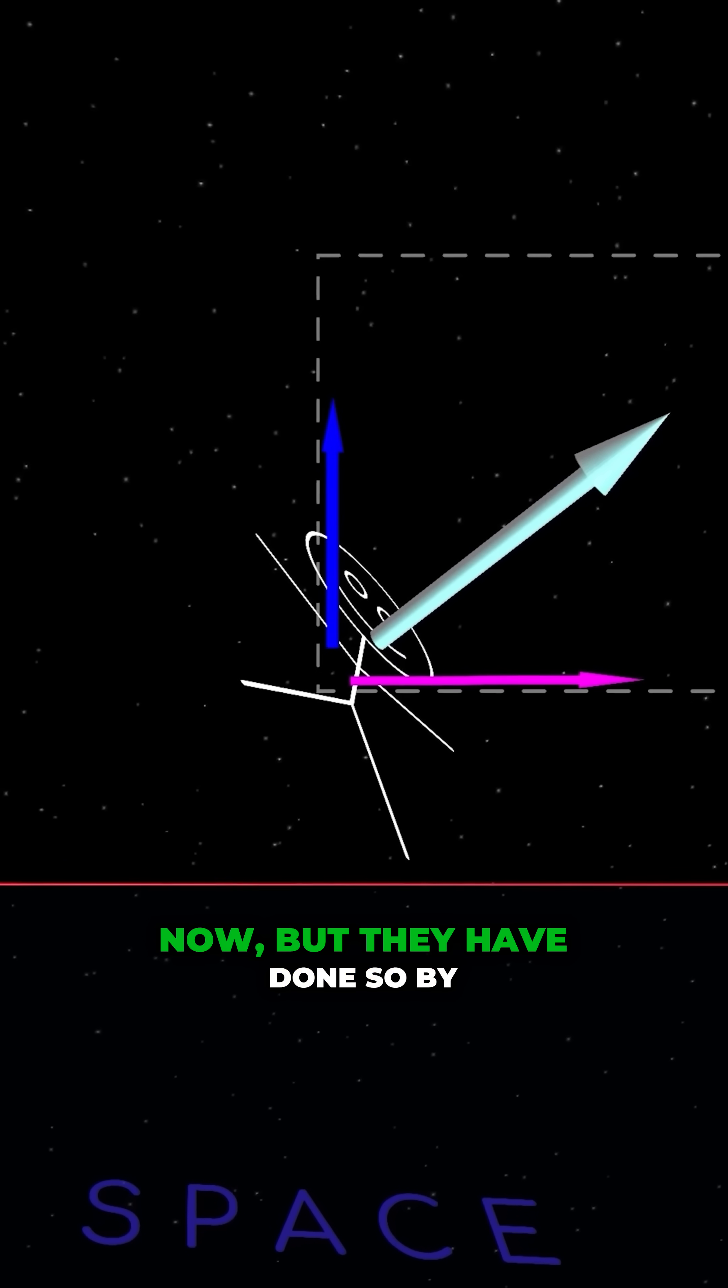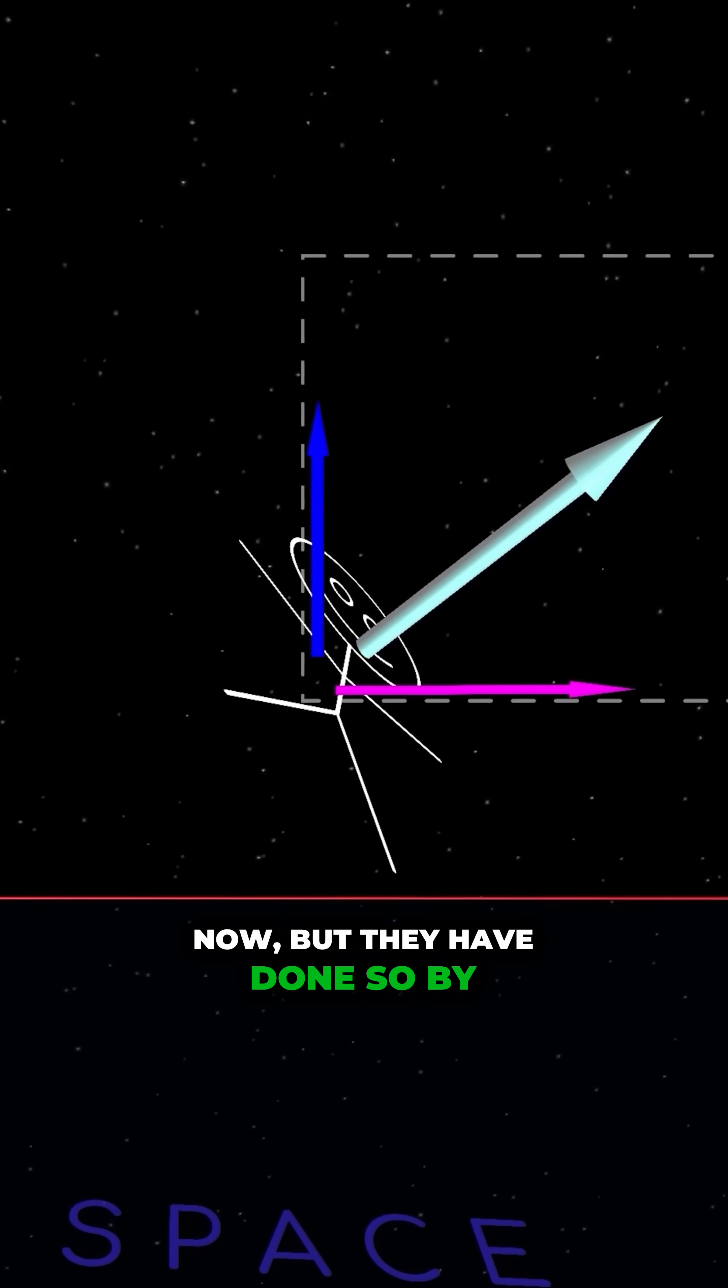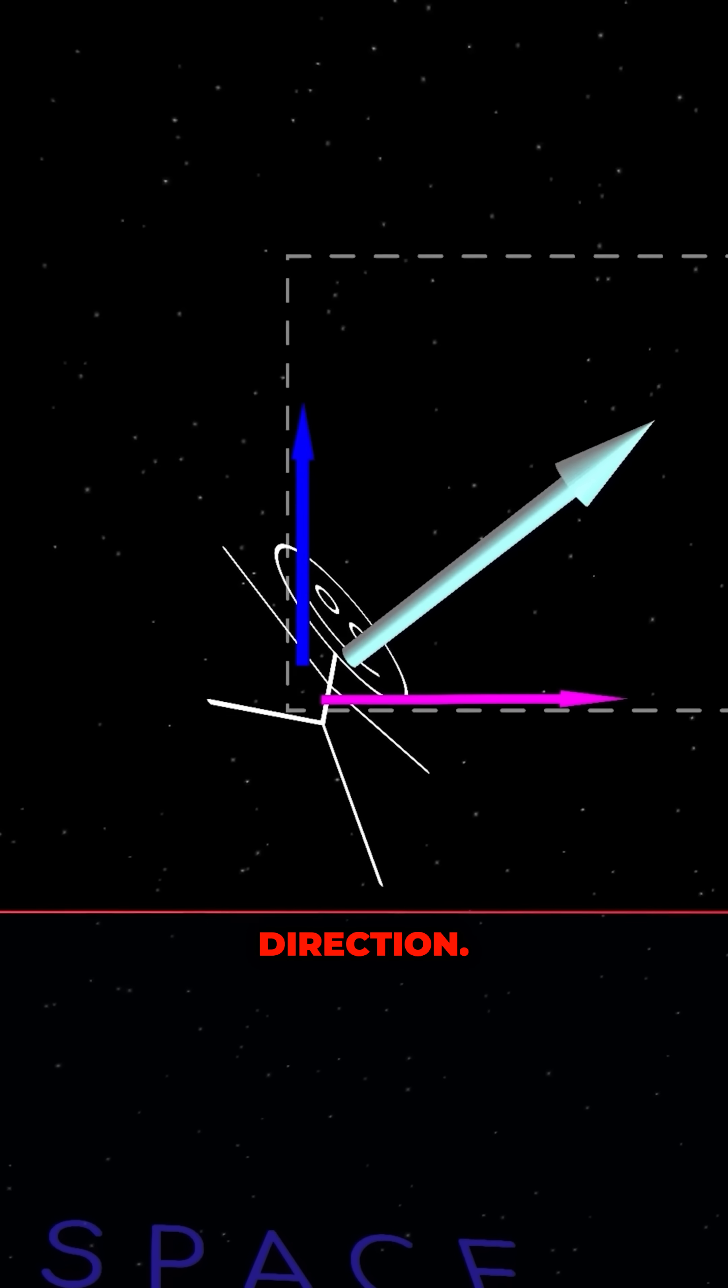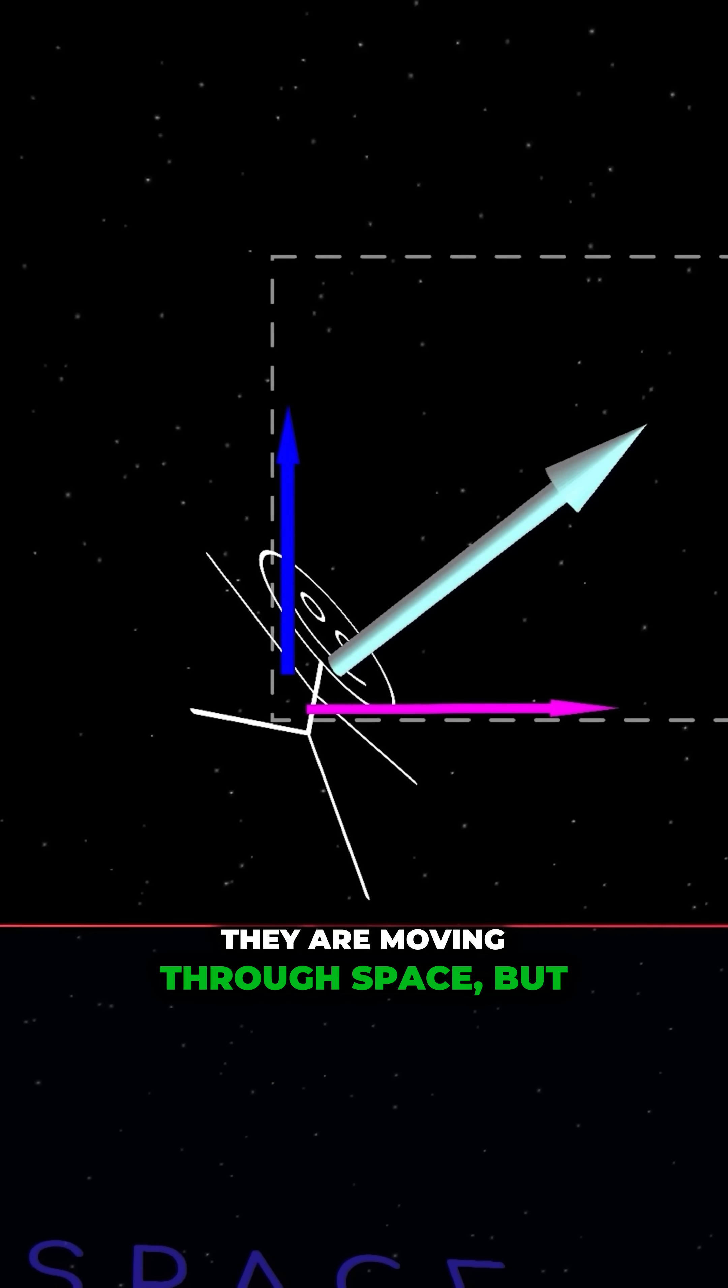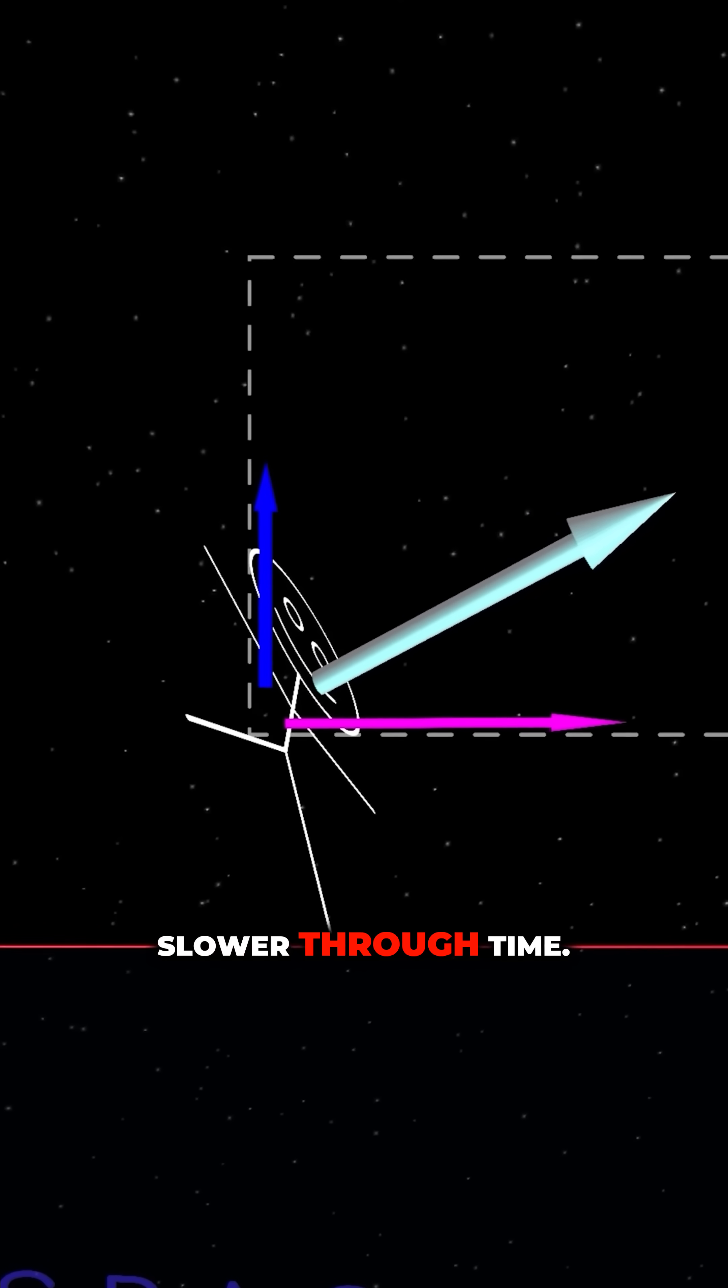They have motion in the X direction now, but they have done so by reducing their motion in the Z direction. They are moving through space, but at the cost of moving a little slower through time.